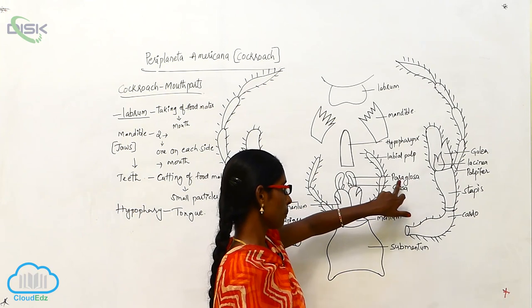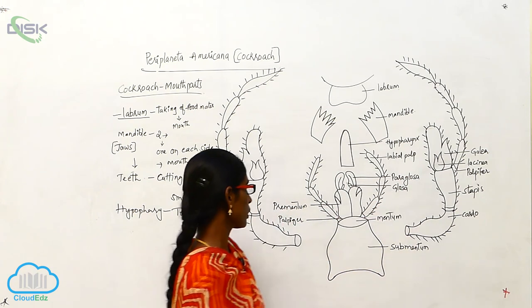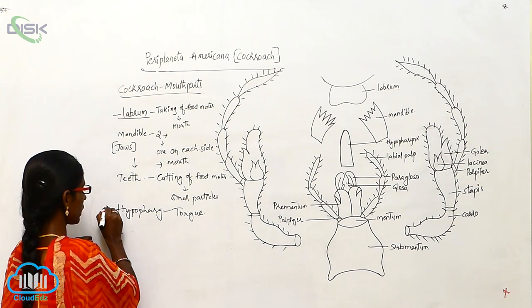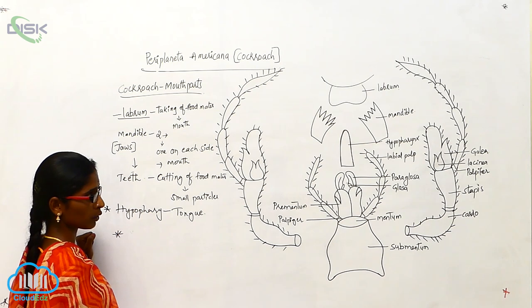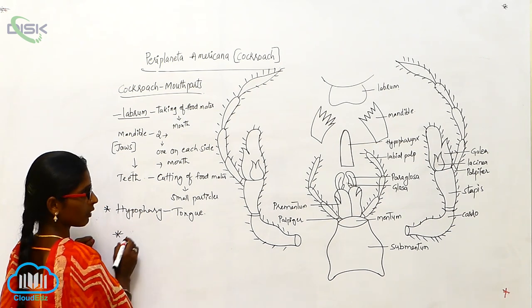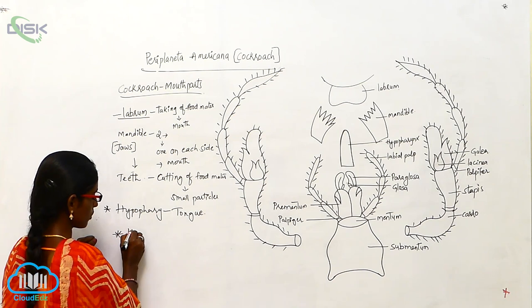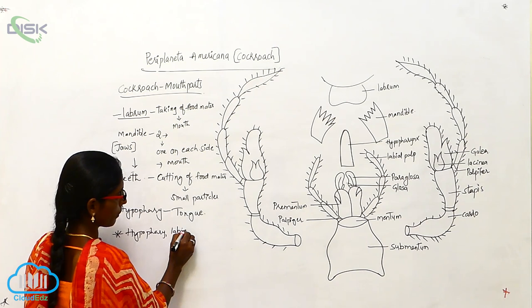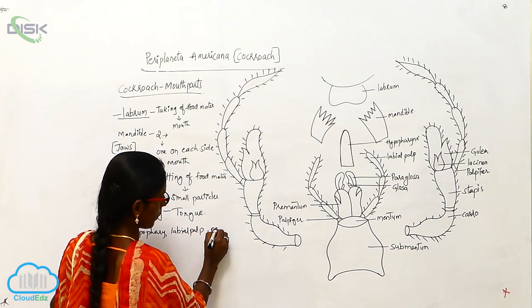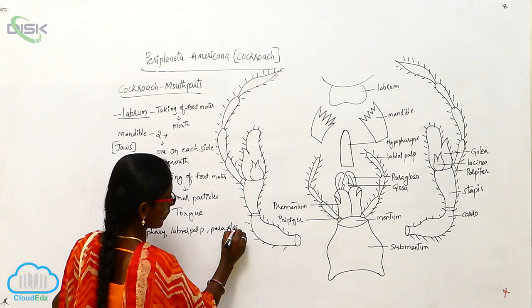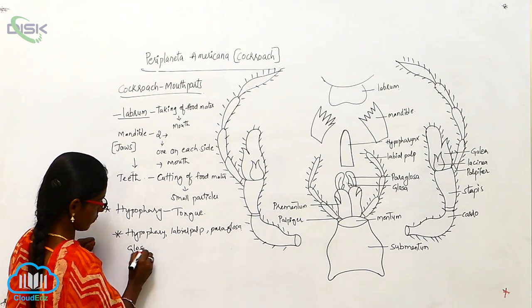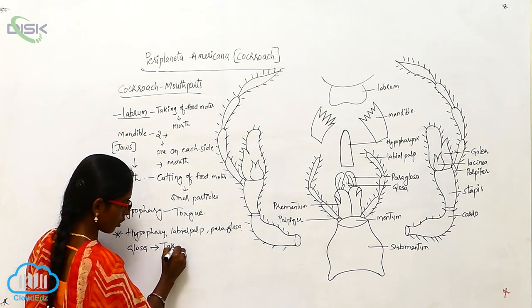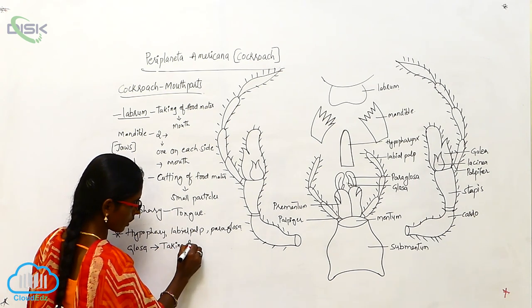The labial pulp, paraglosa, and glosa are helpful for taking food material into the mouth and cutting of food material.